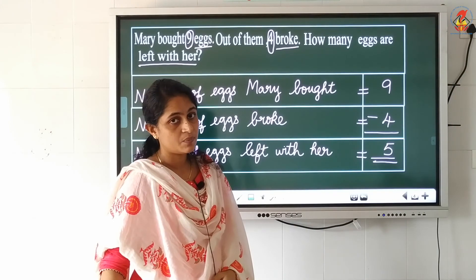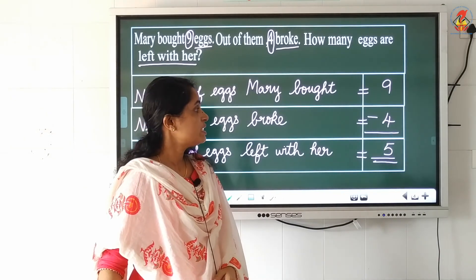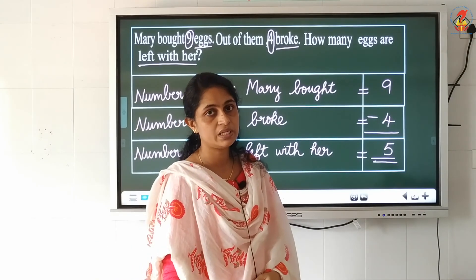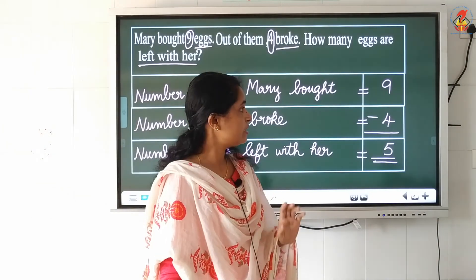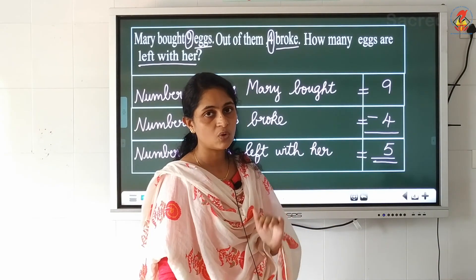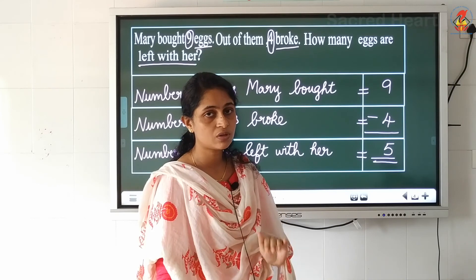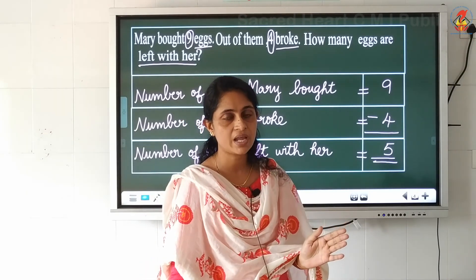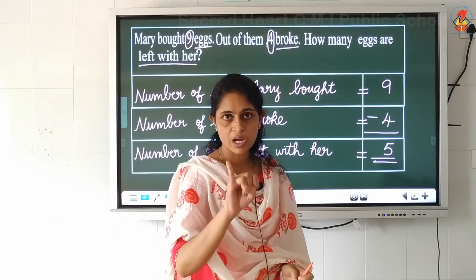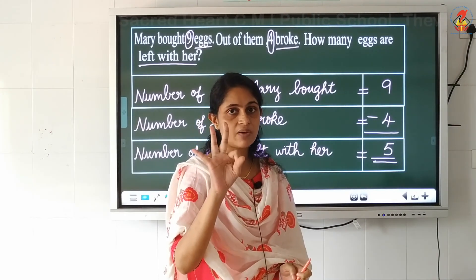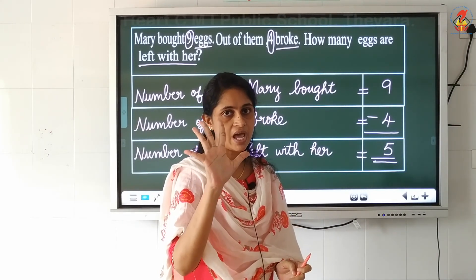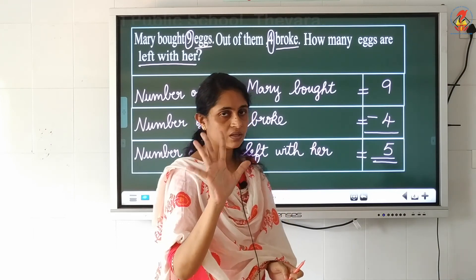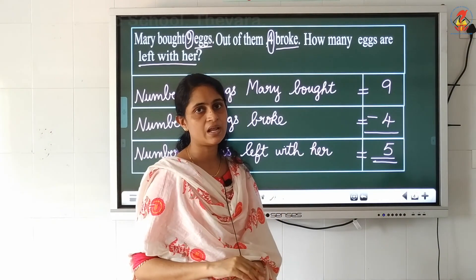To subtract, start counting after the smaller number until you reach the bigger number. Here 4 is the smaller number, so count after 4: 5, 6, 7, 8, 9. How many fingers are raised? 5 fingers. So 5 is your final answer.